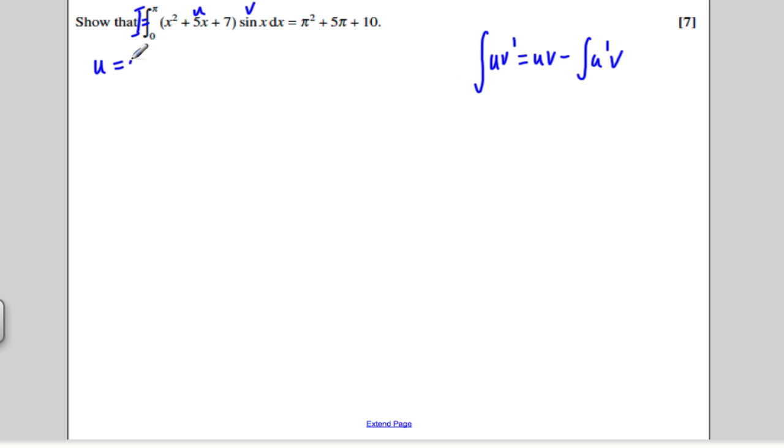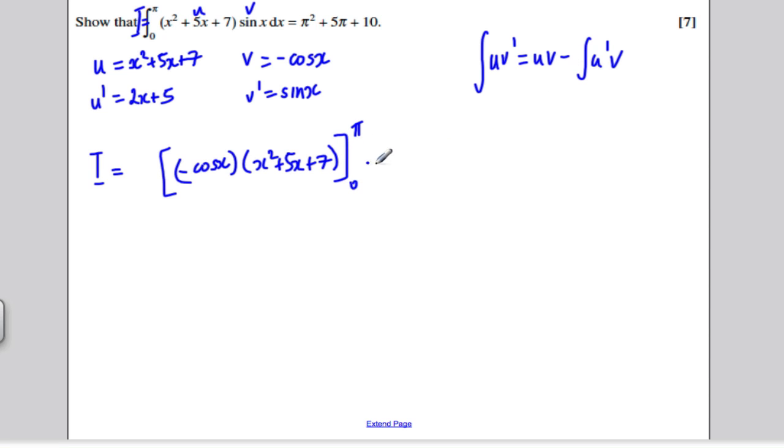I'm going to write my u as x squared plus 5x plus 7, so my u' is 2x plus 5. My v' is sine x, and this easily integrates - the integral of sine x is minus cos x. Let's use the formula. My integral is therefore uv, which is minus cos x multiplied by x squared plus 5x plus 7, all evaluated between 0 and π, minus the integral of u'v.